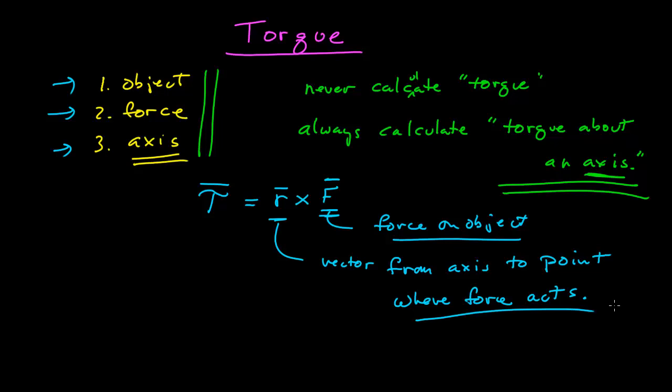Unlike Newton's laws before, when we were looking just at forces, it didn't matter where the forces acted. The sum of the forces was equal to the mass times the acceleration of the center of mass — where they acted didn't matter. That is no longer the case. Where the force acts is of enormous importance when calculating torques. We first have to assemble these three things, and from that we can calculate the R vector, which points from the axis to where the force acts, and then calculate the cross product to get the torque.